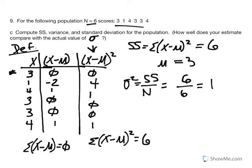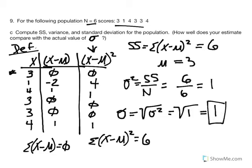Finally, to bring variance back into original units, we take the square root of our variance. The square root of 1 equals 1. So on average, scores in the distribution deviate from the mean by one point. The mean was 3, and scores of 3 deviate by 0 points, while scores of 4 or 1 have some deviation. On average, all scores deviate from the mean of 3 by 1 point.